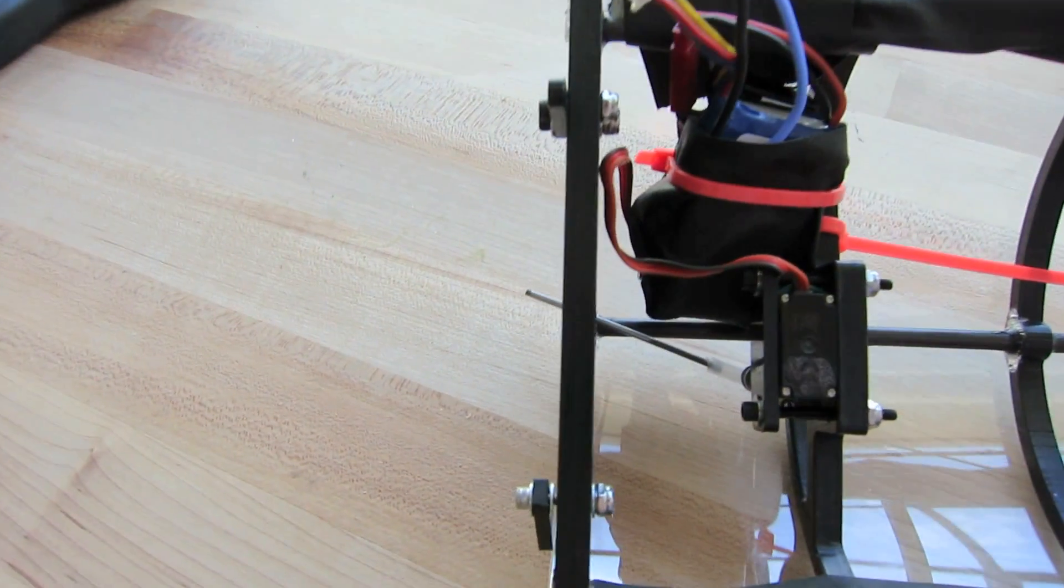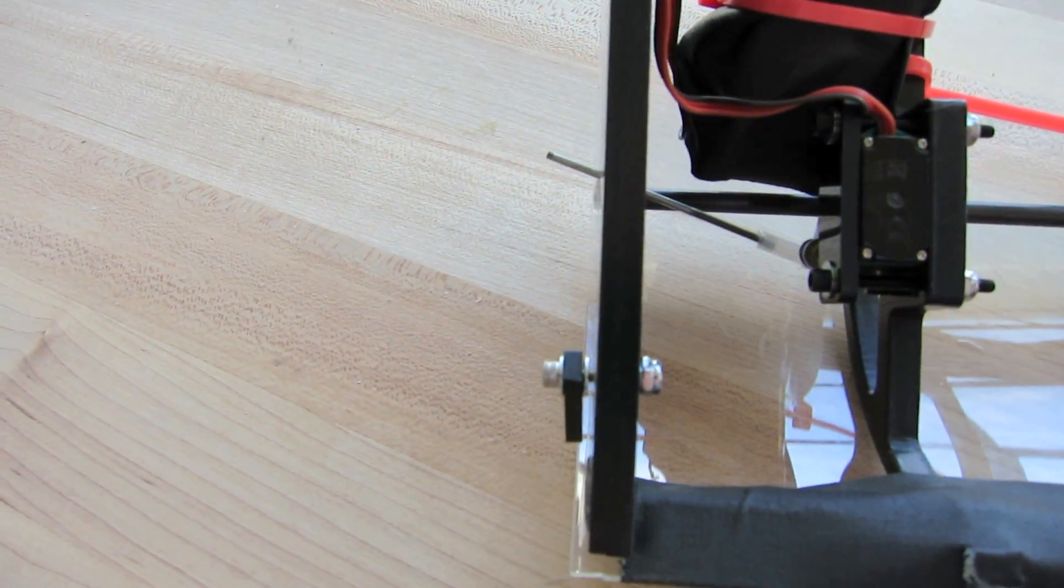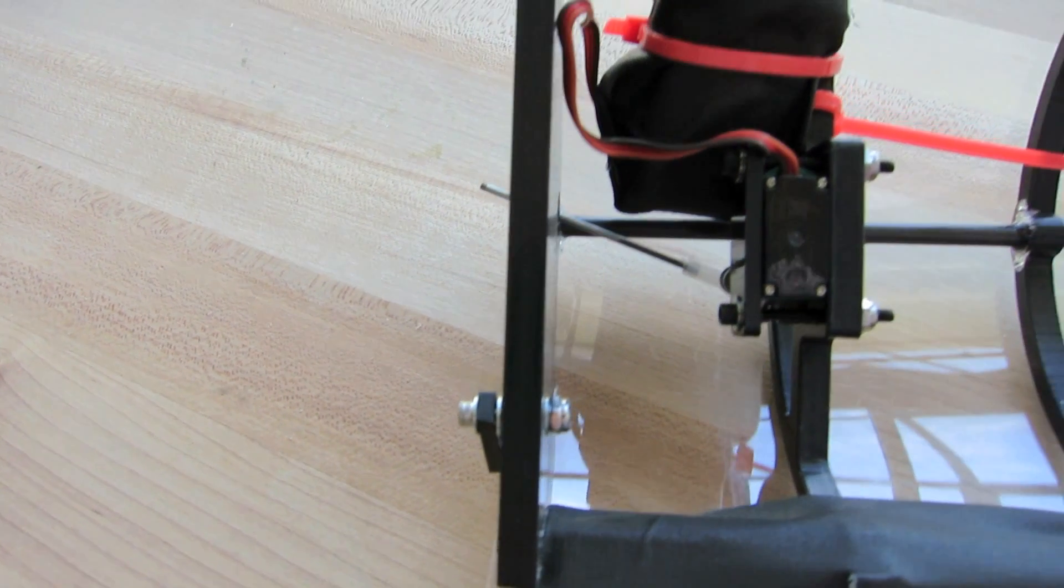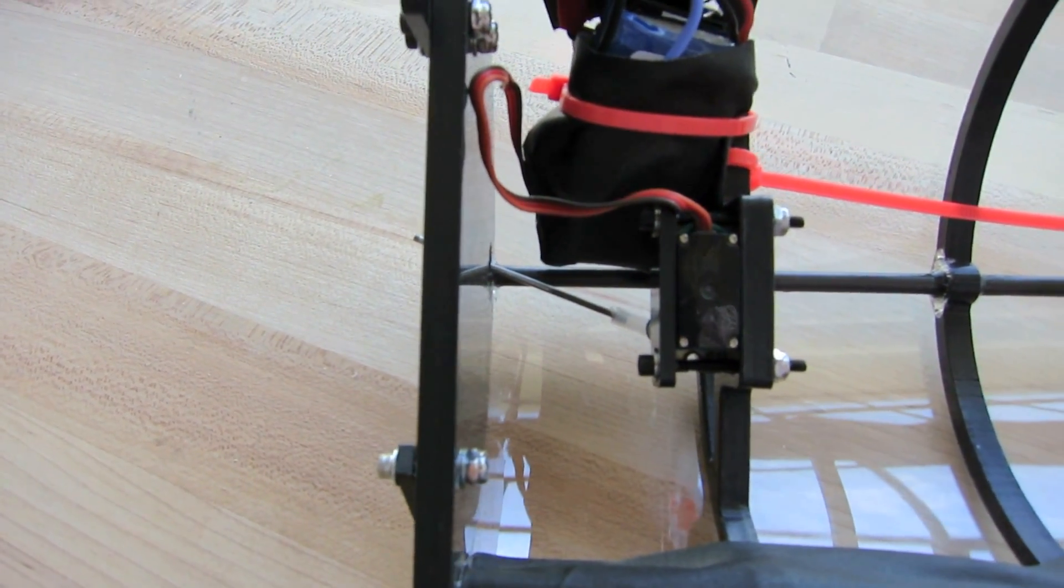And then up front is the actual actuator. It's a little servo that moves, and I'll show you that in a second, to open and close the sabo midair and wirelessly.